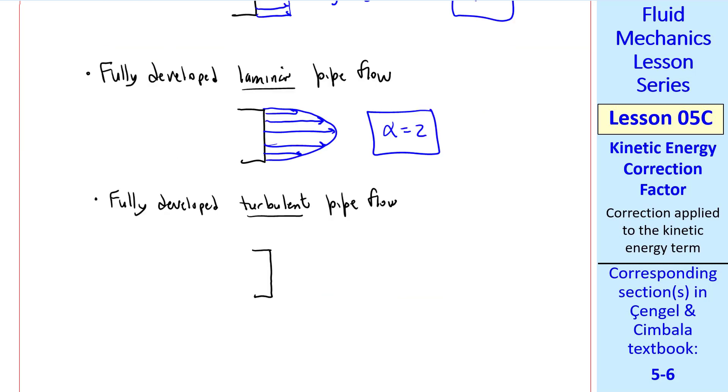For fully developed turbulent pipe flow, the velocity profile is not parabolic, but looks more like this, where it's fairly flat in the middle, but is rounded toward the walls. It turns out that α is about 1.04 to 1.11, depending on Reynolds number.